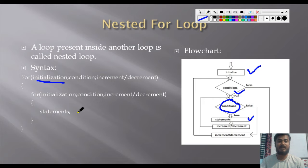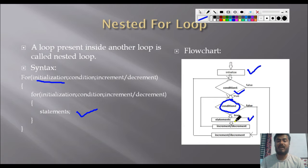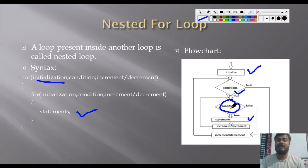If the inner loop's condition is true, the statement gets executed, and there is increment or decrement of the variable used in the loop. It goes back up for checking condition two again. In this way, till the condition is true, the inner loop keeps executing. If the inner loop condition becomes false, it goes for the outer loop's increment or decrement, then checks the outer loop condition again. If the outer loop condition becomes false, the control comes out of the nested loop.